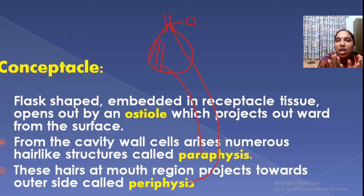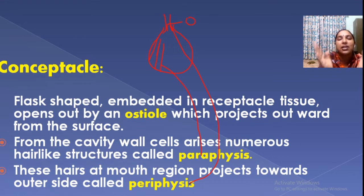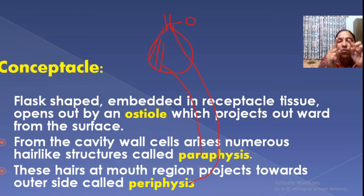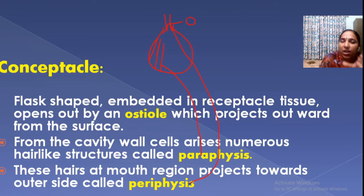A flask-shaped conceptacle with an opening known as the ostiole: hair at the base is paraphyses, and hair at the mouth is periphyses. This is the typical structure of a conceptacle.